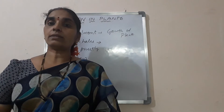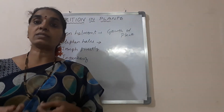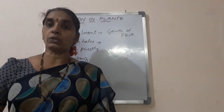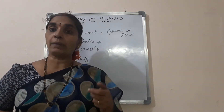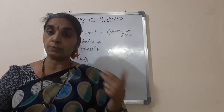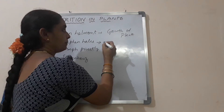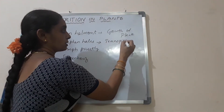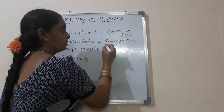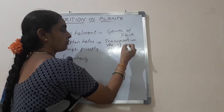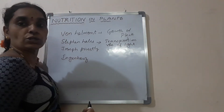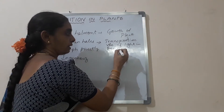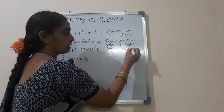Next, Stephen Hales. What did he say? He said about the transpiration process — the excess water present in the plant and how it comes out. The removal of excess water from the plant is done by the process of transpiration. He also said about the role of light in the process of nutrition, that is in the preparation of food by plants.